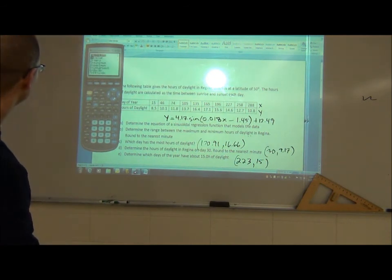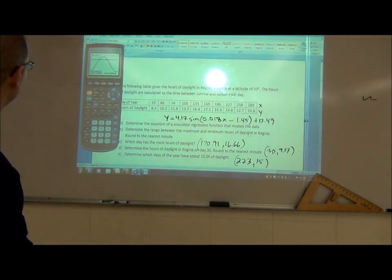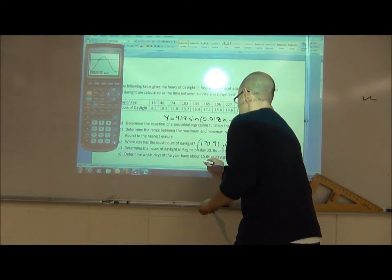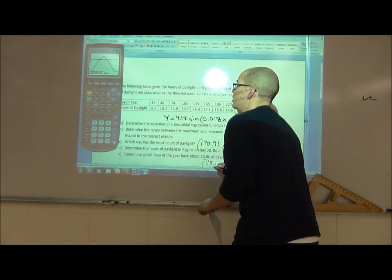Okay, so we found the second point. One of the days is day 223. And the other one, well, you just cursor over now, so you got to go back and do it again. Go trace, down to intersect, go to the left. I keep cursoring over. Okay, cursor over to around that spot. Enter, enter, enter again. And the other point is day 118.